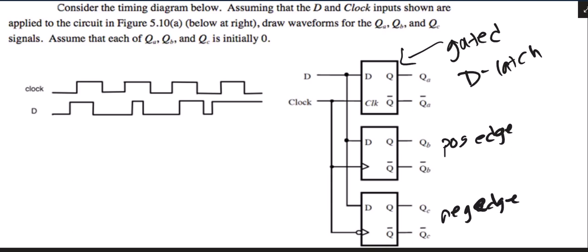So for QA, QA can change the entire time the clock is 1. So I'm going to draw my little vertical lines here. But remember that Q follows D. And we're told that they each are initially 0. So a gated D latch can't do anything when the clock is 0. So it just stays there.